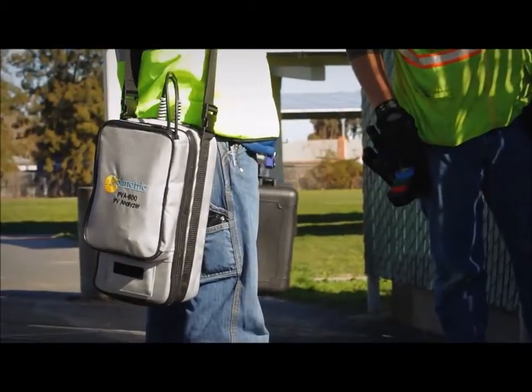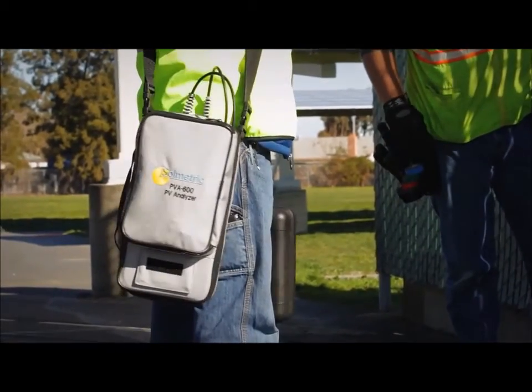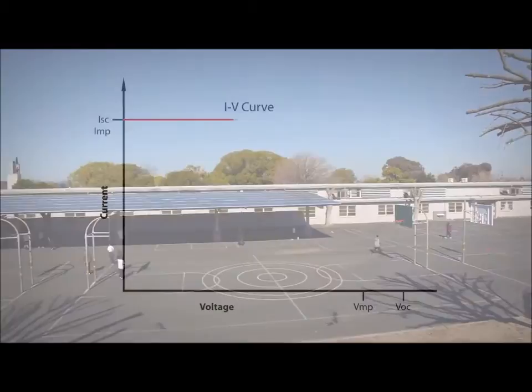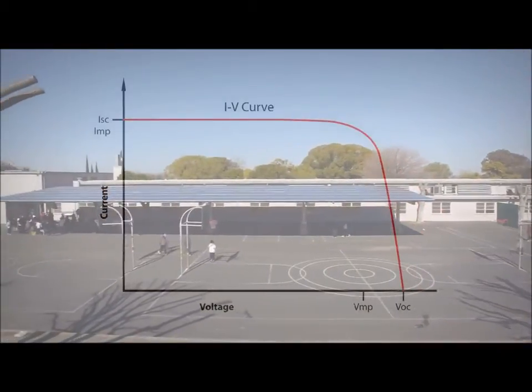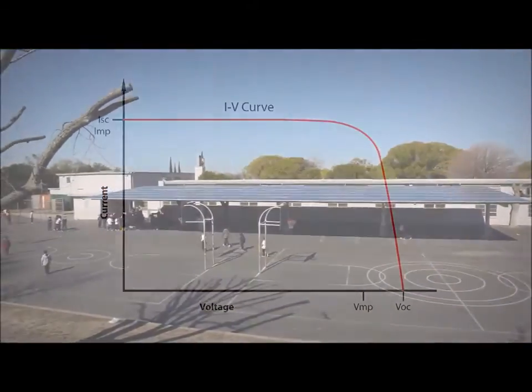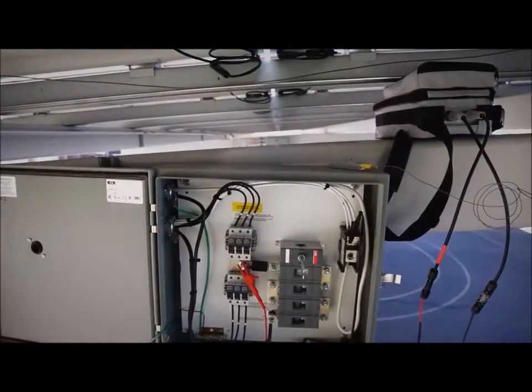The Solmetric PV Analyzer is a complete electrical test solution for verifying photovoltaic array performance. The PV Analyzer can acquire an IV curve trace for a PV module, string of modules, or multiple strings of modules.